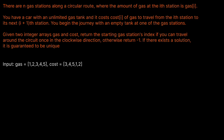Hello and welcome back to the Cracking Fang YouTube channel. Today we're going to be solving LeetCode problem 134, gas station. There are n gas stations along a circular route, where the amount of gas at the i-th station is gas of i. You have a car with an unlimited gas tank and it costs cost of i gas to travel from the i-th station to the next i plus one station. You begin the journey with an empty tank at one of the gas stations. Given two integer arrays, gas and cost, return the starting gas station's index if you can travel around the circuit once in the clockwise direction, otherwise return minus one. If there exists a solution, it is guaranteed to be unique.